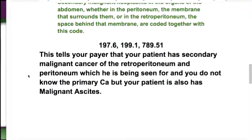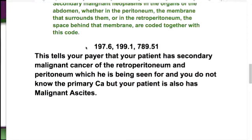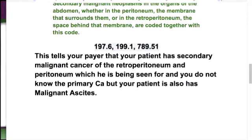From what was said in the question, I would have listed 197.6, 199.1, and 789.51 — and that's telling the payer that your patient came in and is being seen for this secondary cancer, we don't know what the primary cancer is, and they have malignant ascites. Now, if they're being treated for the malignant ascites, you could put that 789.51 code in there, but 789.51 is not going to be listed first.